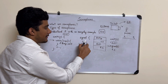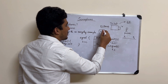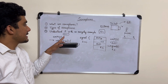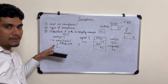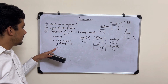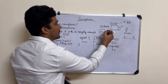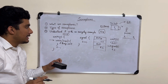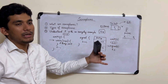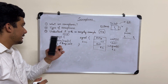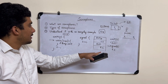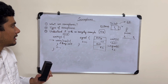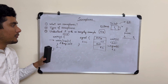As soon as P1 finishes, it calls signal in the exit section, incrementing S back to one. Now P2, which was waiting in the loop, sees S is greater than zero, exits the loop, decrements S to zero, and enters the critical section. At any time only one process is inside the critical section — so mutual exclusion holds. Bounded waiting and progress are also handled, achieving process synchronization.